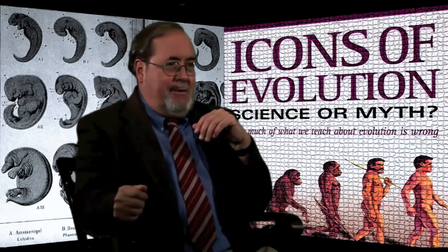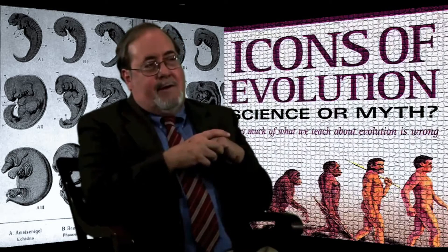The other thing wrong with Haeckel's drawings is that he selected very carefully — he has eight rows in his classic drawing, four of them are mammals. But he excluded various vertebrates that don't fit the pattern. For example, he doesn't have sharks, lampreys, or eels, which are very different. He uses a salamander instead of a frog, because a frog doesn't look like that at all. Among the mammals, he leaves out the platypus and the kangaroo, which are different divisions of the mammal group, and only includes mammals that happen to look very similar. We call it cherry picking.